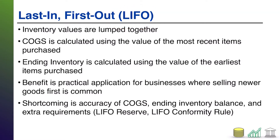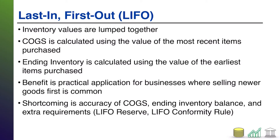In this method of accounting for inventory cost flows, we are going to lump all of our inventory together. In other words, we're not going to track it all individually — we're not going to give it separate barcodes. If we're dealing with say five laptops that are all the same model but were purchased at two or three different times at different prices, we're just going to throw them all on the shelf together, listed as inventory with a total balance on our balance sheet.